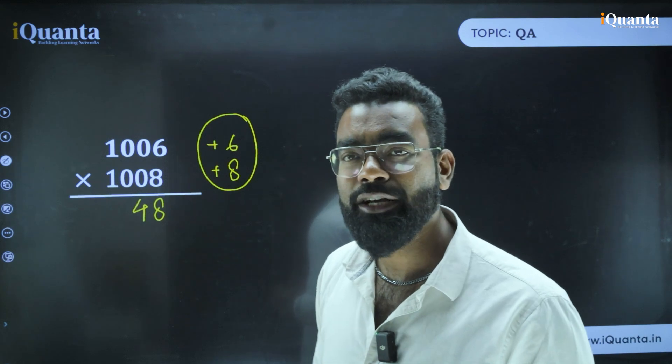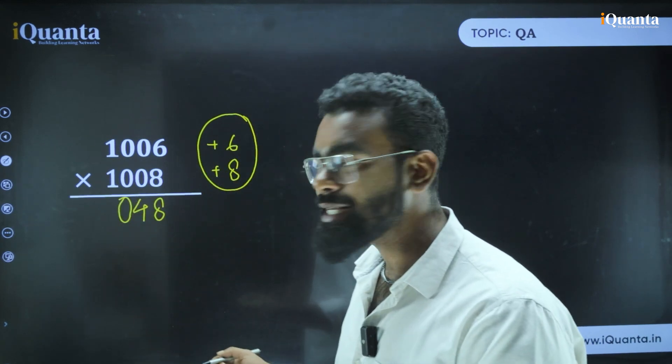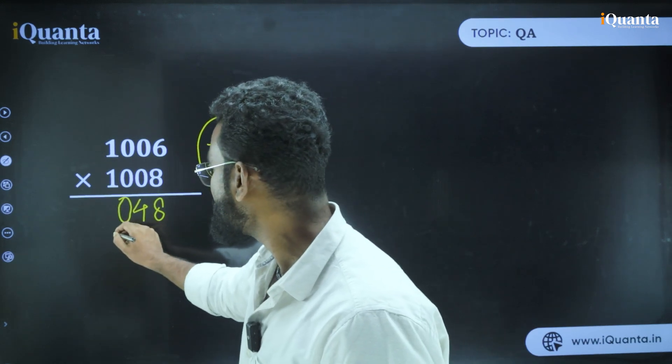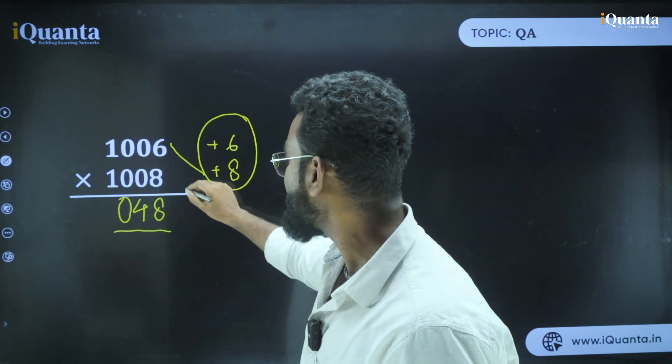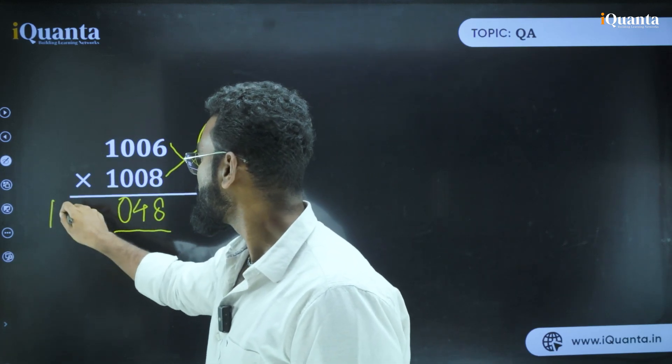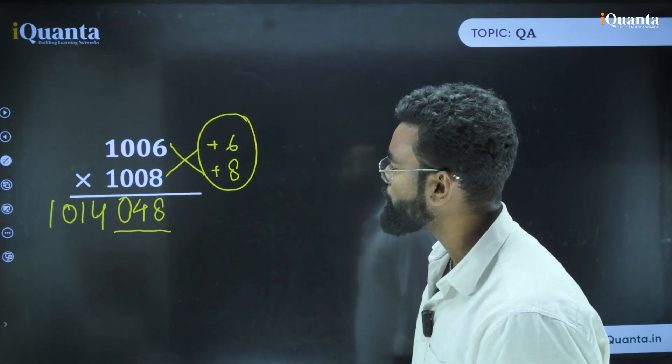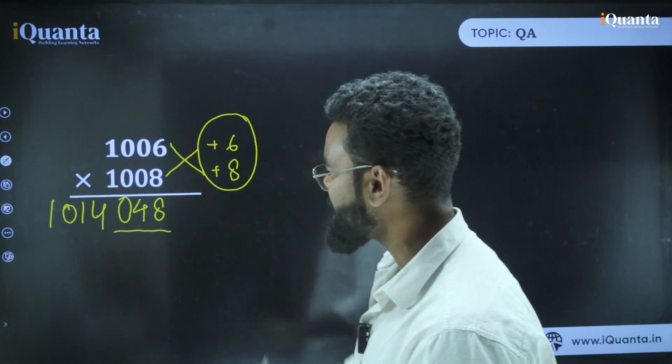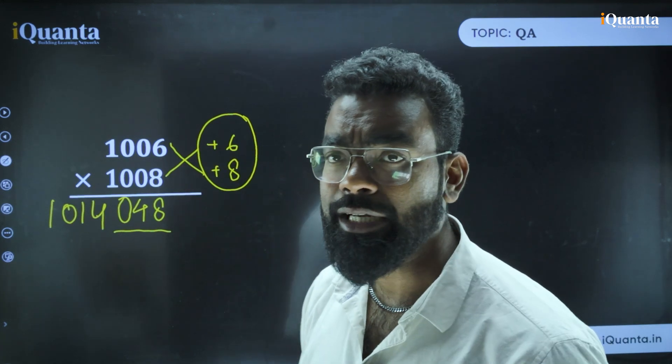As we have already got 48, we add 0 here. So it is 048. Now the next thing you have to do, add the same way like 6 plus 8 or 8 plus 6. So it is 1014. Hence your answer is 1014048. Either you add 1006 plus 8 or you add 1008 plus 6. Both will give you the same answer. I hope I am making this clear to you.